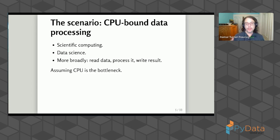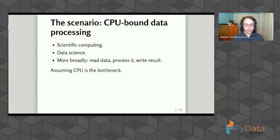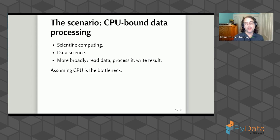What I'm talking about today is data processing — a lot closer to the topic of this conference. Things like scientific computing, data science when you're processing the data. More broadly, the class of tasks where you read in some data, do some processing, and write out a result. And more specifically, I'm talking about software where the CPU is the bottleneck. If you're talking to a database and all your interactions are SQL queries, the way you'll make your software faster is by optimizing SQL queries or adding an index — that's not what I'm talking about today.